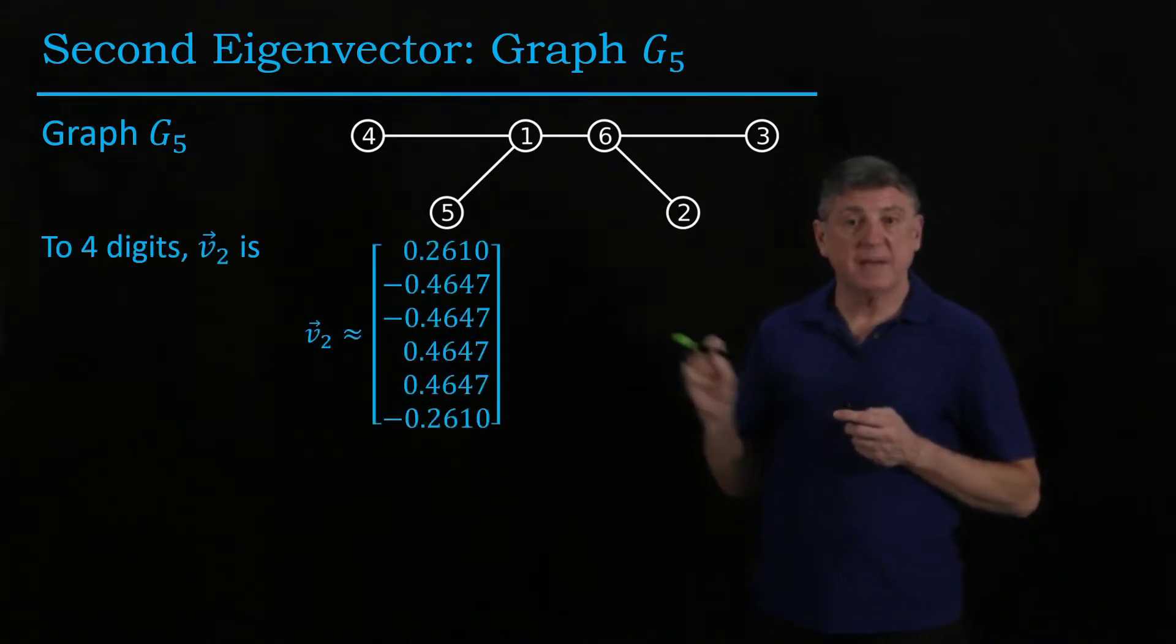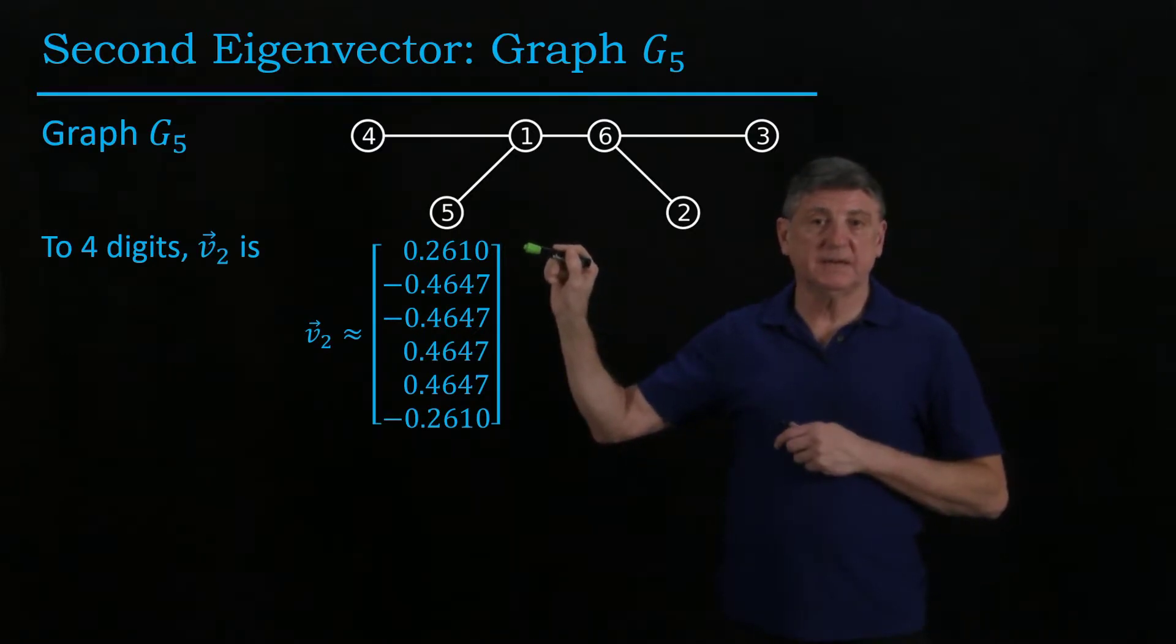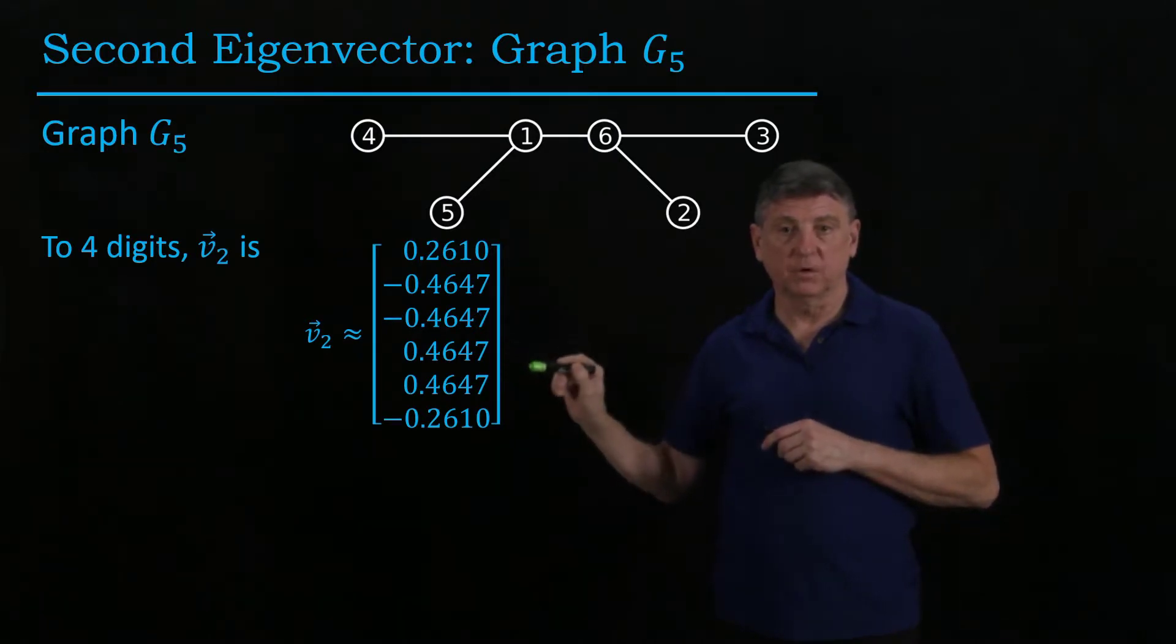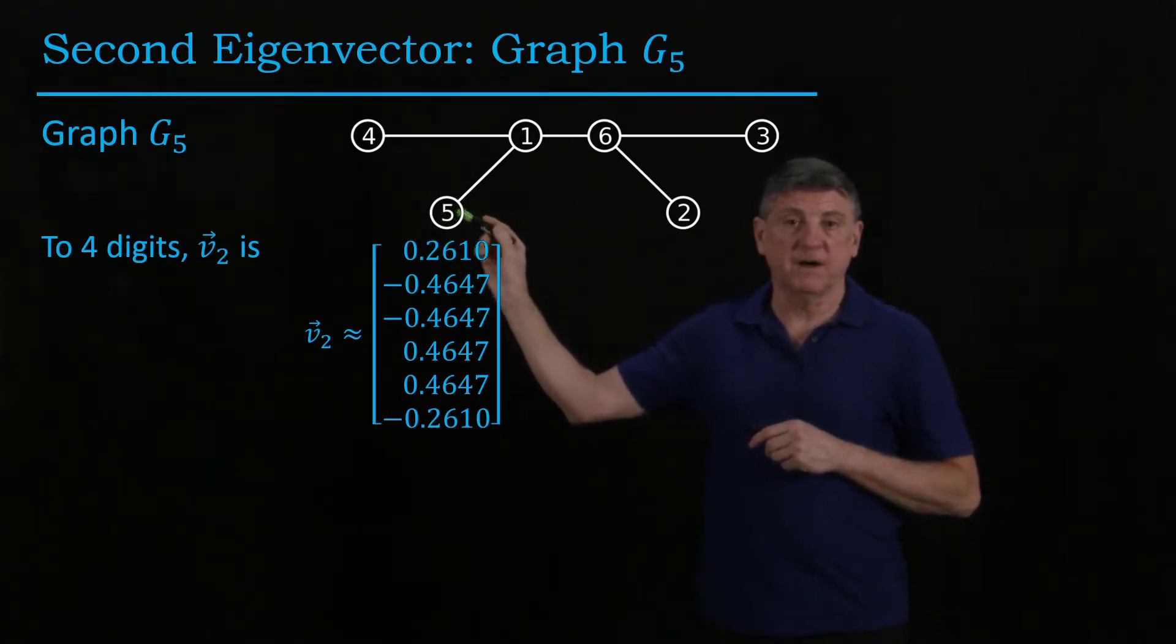And so what's happening is that if we take a look at that second eigenvector, what we see is it's identifying the positive as entries one, four, five, and that corresponds to vertices one, four, five.